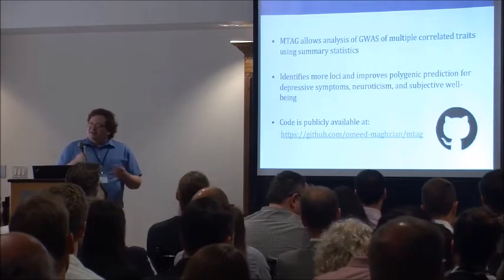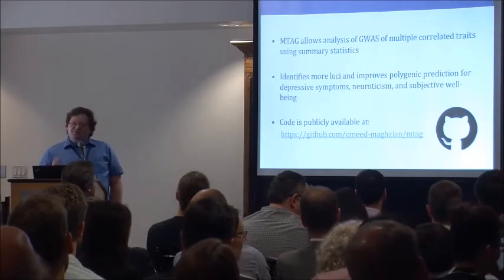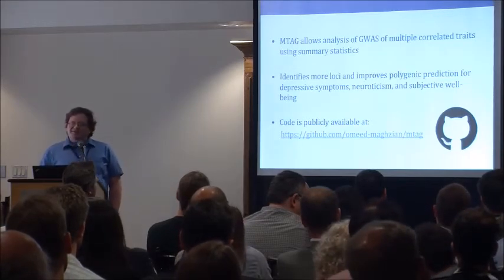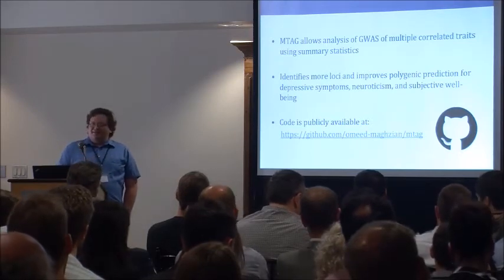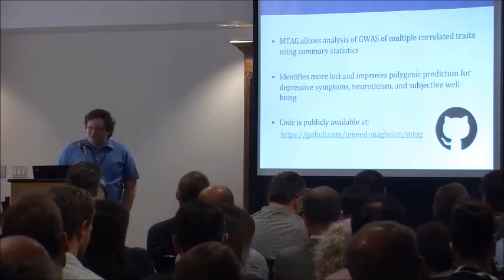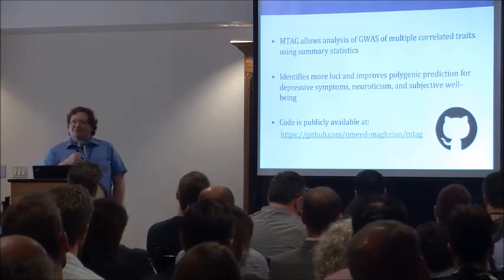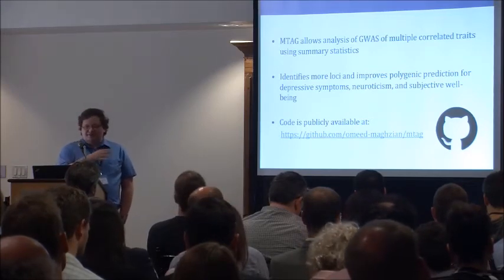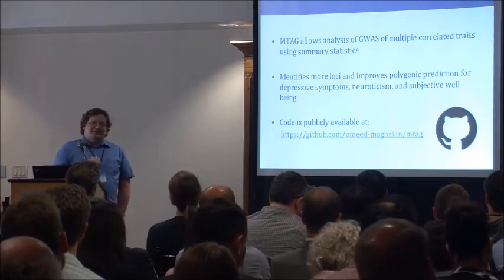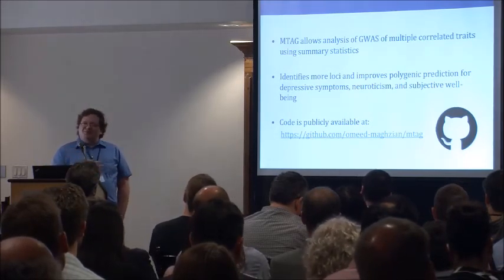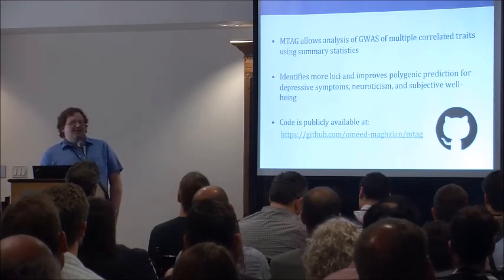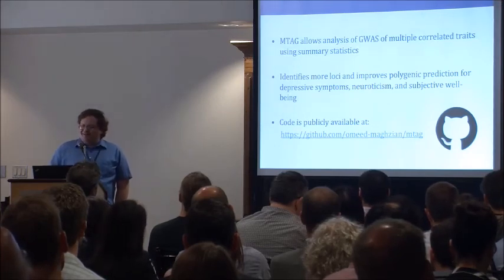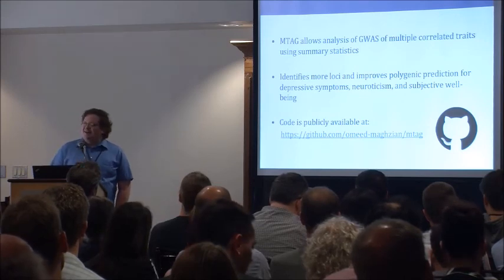To wrap up: we have this method called MTAG that lets us pool GWASs of correlated traits from summary statistics with potential sample overlap between the individual GWASs, to push towards better estimates of the SNP-level betas for your trait of interest. We can both discover more loci and improve the accuracy of polygenic prediction, as shown here in the application for depression, neuroticism, and subjective well-being. As of this week, the code for this is now publicly available on GitHub — a lot of effort has gone into getting it ready for more general use, and we're excited to see new applications of MTAG to other phenotypes.